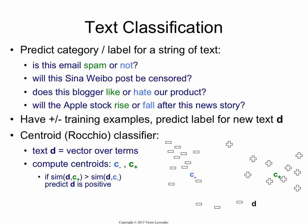The centroids don't represent all documents in the class, but they represent the central mass. The similarity can be computed as cosine similarity. If all documents are unit length, cosine is the same as a dot product. So computing the dot product of D with the positive centroid is the same as the cosine similarity when both are normalized.